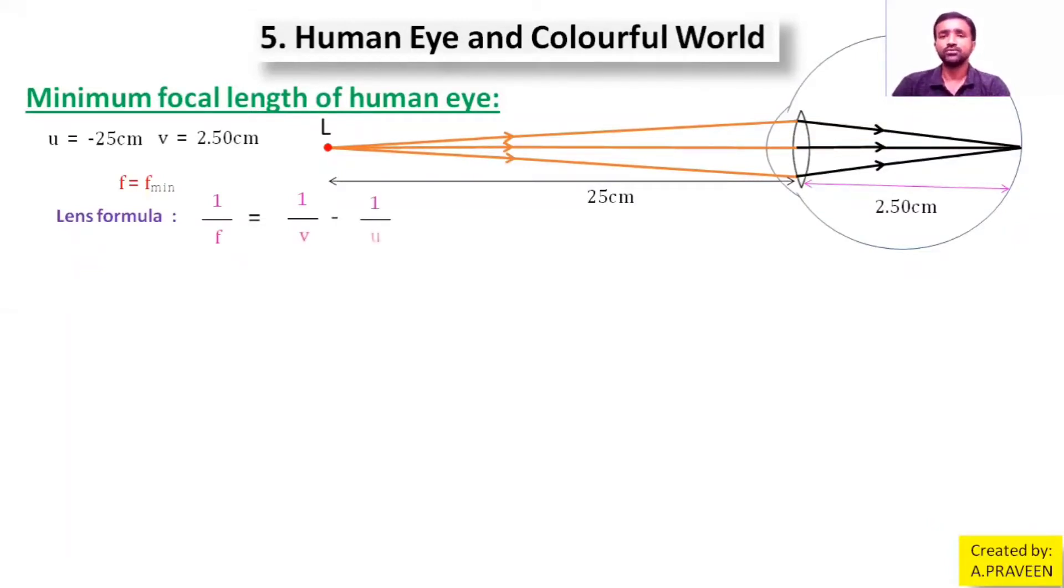Here I know v and u, let me substitute those values in the lens formula. f = f_min, that equals 1/v value is 2.50 minus 1/u value is minus 25 centimeters according to the rules of sign convention. So substitute minus 25 as u here. Then I write 1/2.50 is 1/2.5.